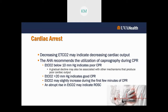To optimize CPR, consider whether the compressor is tall enough, needs a stool, or whether you need a hard board under the patient. We want end-tidal CO2 between 15 to 20 — ideally 20 is the magic number — indicating good CPR. End-tidal CO2 may slightly increase during the first few minutes of CPR. An abrupt rise to 40, 50, or 60 may indicate ROSC — it's a great physiologic indicator. Monitor before and after CPR to track patient status.